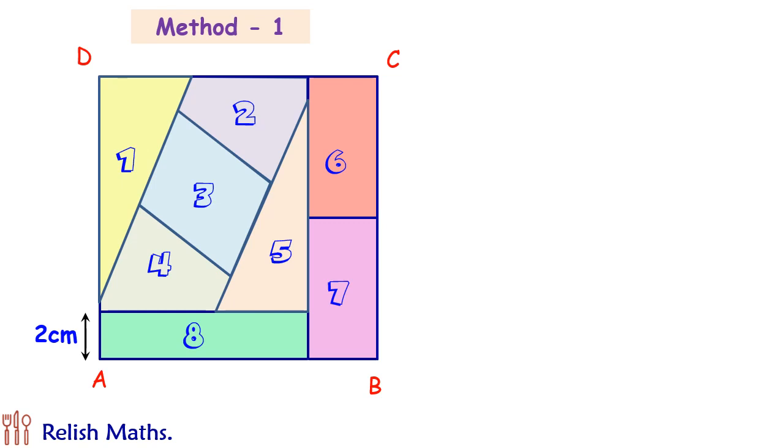Let's discuss the solution. We will be solving it by two methods, whereby in the second method we will not use any calculation. Each part is given as equal, so let's take the area of each part as A.